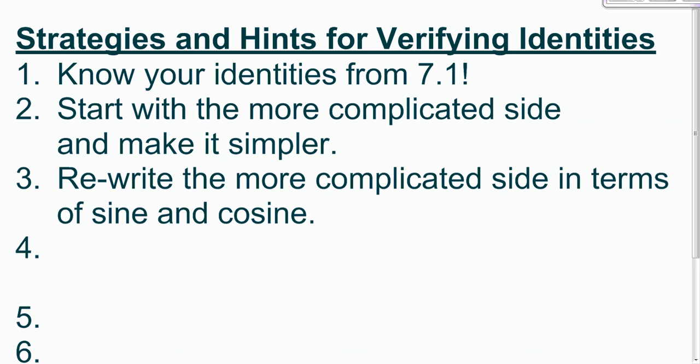Third, rewrite the more complicated side in terms of sine and cosine. If you're not sure what to do and you've got tangent or secant or cosecant or cotangent, write in terms of sine and cosine and see what divides out because usually something will and then your eyes will be opened.